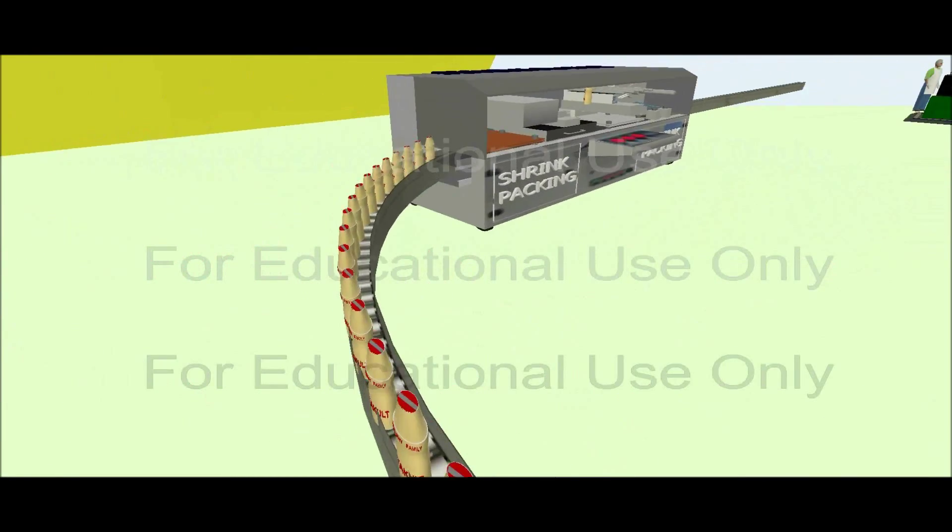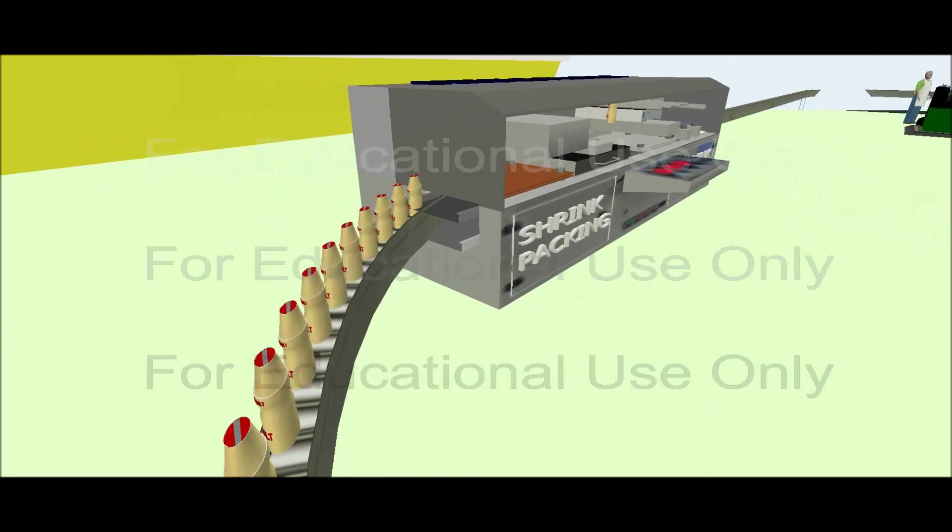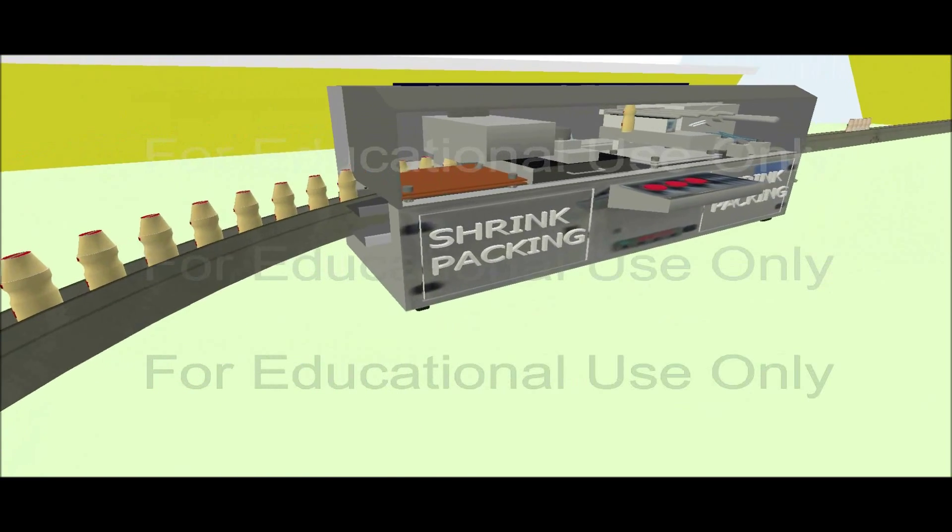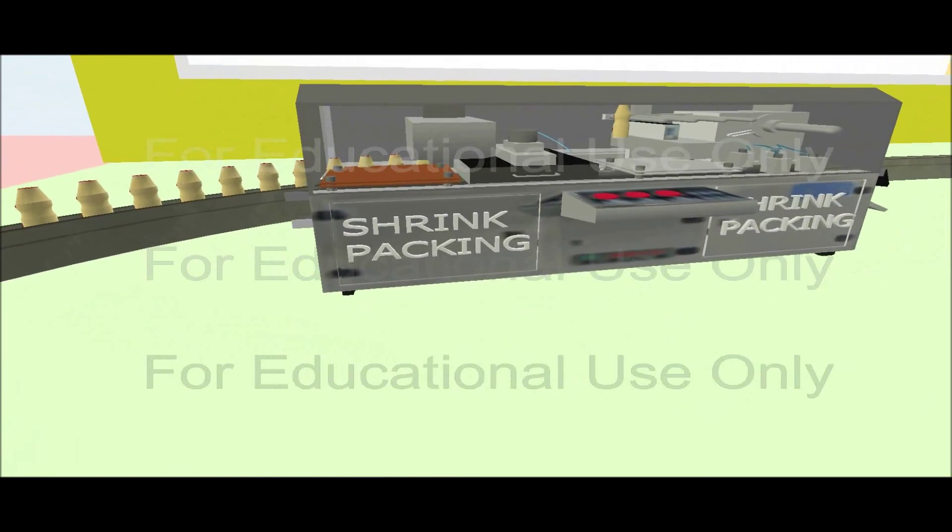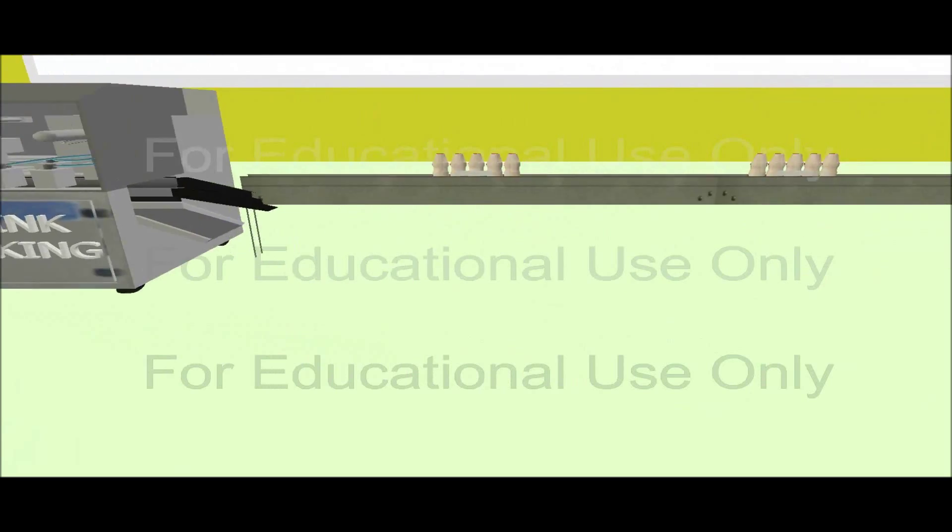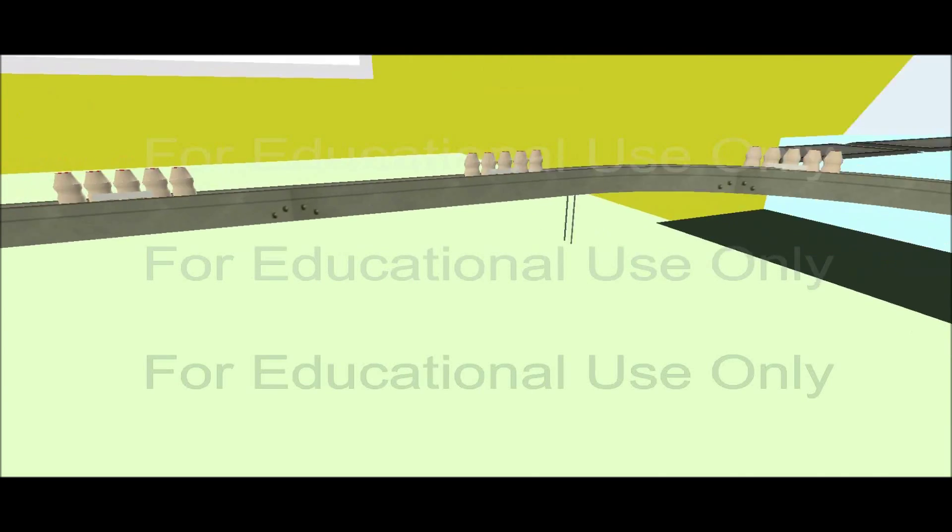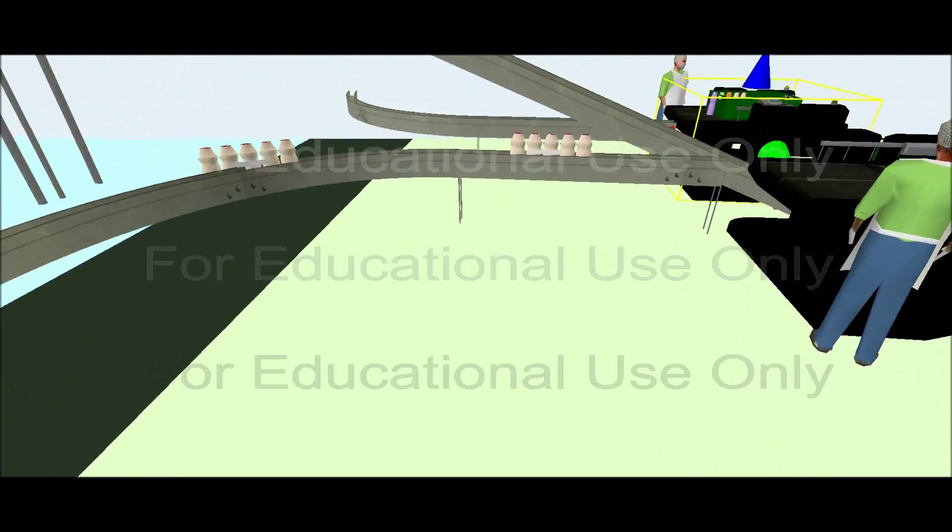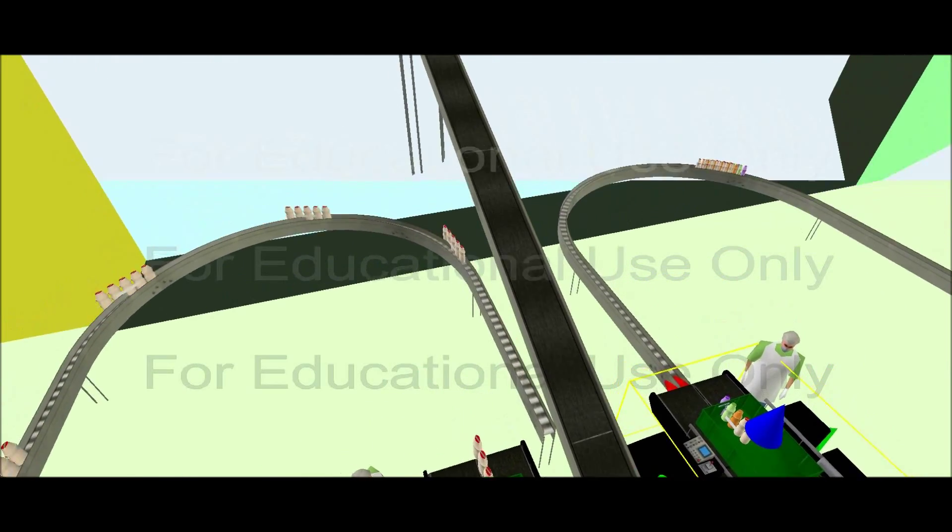Sealed Youcold bottles can be shrink-packed by the shrink-packing machine. The machine packs Youcold bottles into a Youcold pack. The shrink-packed bottles are then placed into a tray consisting of 16 shrink packs.